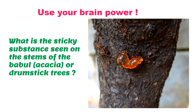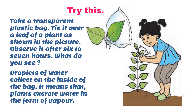We often find sticky substances that come out of the bark or branches of a tree. This sticky substance is nothing but the excreta of the plant — the unwanted part which the plant throws out. This is the plant's way of excreting, throwing out the unused part of the nutrients it has taken in.